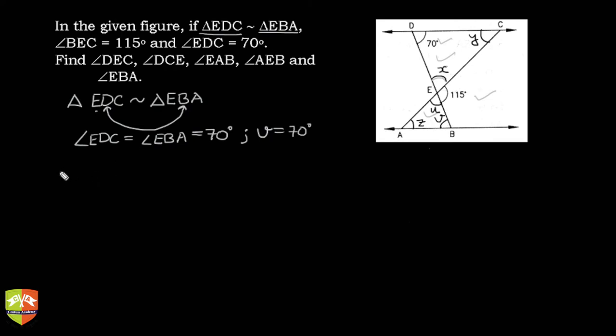Now, in triangle EAB, if you see, 115 degrees is an external angle. So angle BEC is equal to Z plus V. Why is this? This is because of the external angle property - external angle is equal to sum of interior opposite angles.